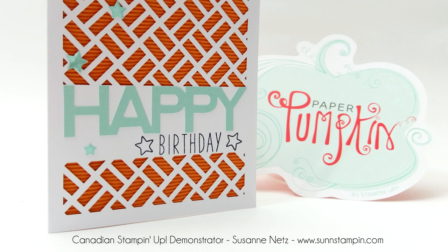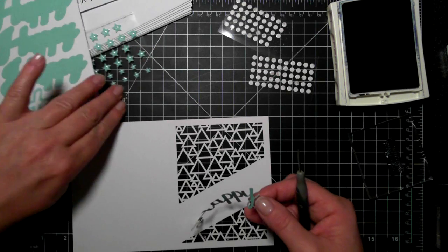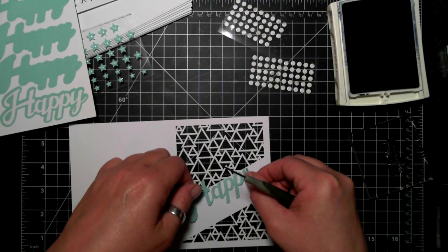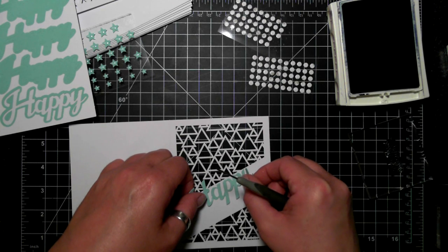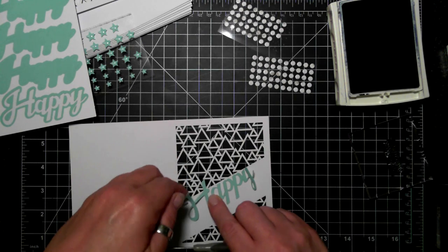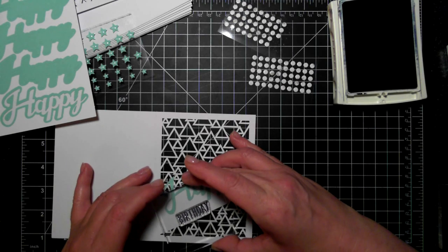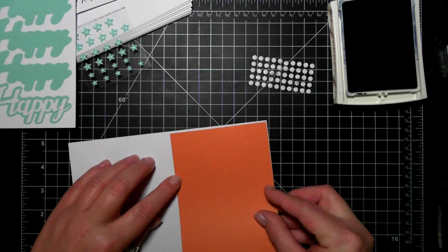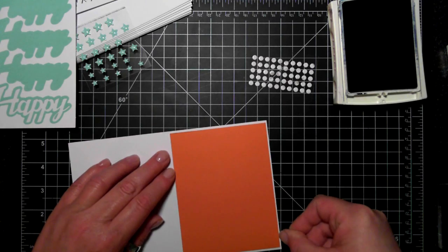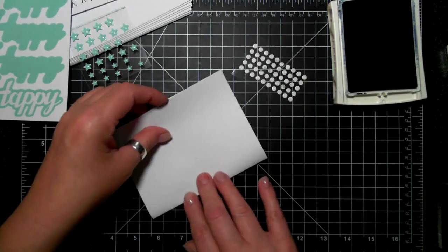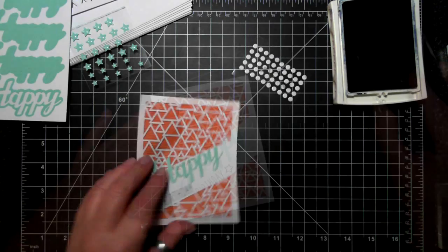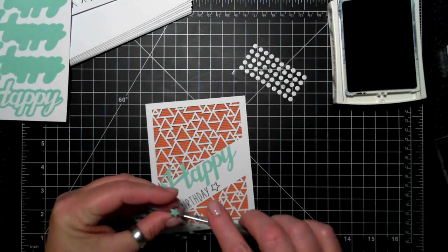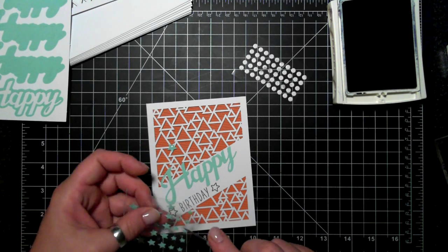That is the example that Paper Pumpkin shows you, and this was the other example. Pretty much the same thing. These cards come together very quickly if you go by example. Today's video is all about the alternatives, so I'm glad you could join me and stick around for a little bit of a longer video because I'll be sharing my alternatives on how to play up this card kit.